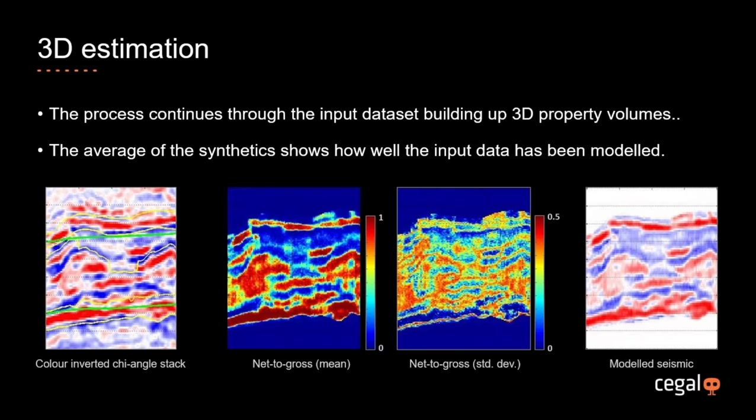The process works trace by trace. An example shows the input color-inverted angle stack on the left, then the net-to-gross mean and standard deviation of the property estimate. On the right is the average of the pseudo well synthetics, illustrating the quality of the model and how well the seismic data has been modeled. Comparing the synthetic with the input seismic data on the left, we've done a pretty good job of modeling it.